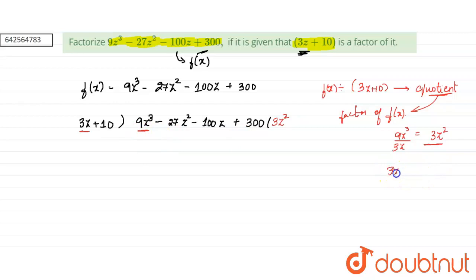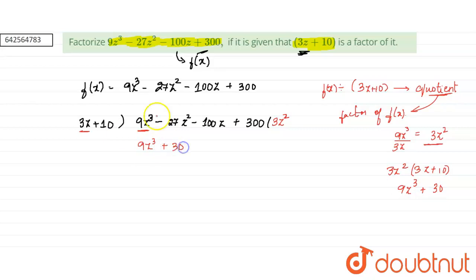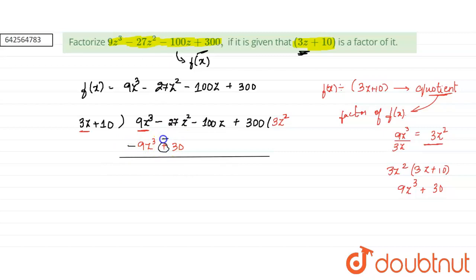We take 3z square, the obtained value, and multiply it with the factor, that is 3z plus 10. So we get 9z cube plus 30z square. This is what we write here: 9z cube plus 30z square. And like any normal division, we subtract these terms. So minus 9z cube and plus 9z cube are cancelled, and we have minus 57z square.